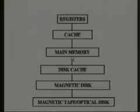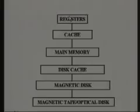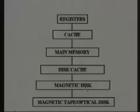The basic memory system in a computer consists of registers, cache, main memory, disk cache, magnetic disk, and magnetic tape or optical disk at the lowest level. The registers are the fastest, with cache being almost equivalently fast. Main memory is slower than registers and cache. We make smaller cache because it is more costly, and a smaller number of registers because they are also expensive, whereas main memory we make in gigabytes today — 64 MB, 128 MB — quite large.